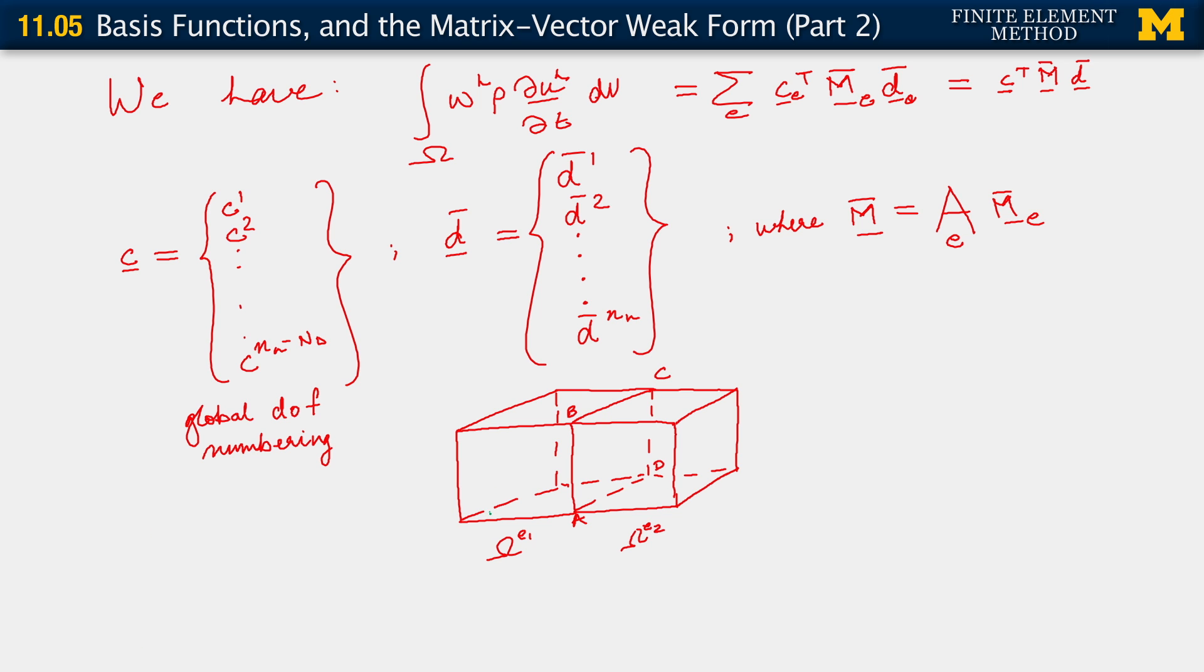And go to the local node numbering. The local node numbering may be one, two, three, four, five, six, seven, eight. And on element e2, we have one, two, three, four, five, six, seven, eight.